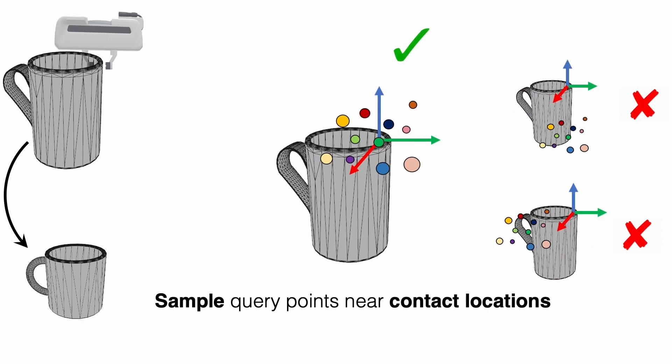To avoid assuming a precisely known contact location, we found that a robust heuristic is to sample query points uniformly in the bounding box of the external object that is used in the task, such as the gripper, rack, or shelf.